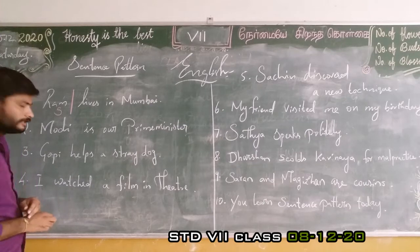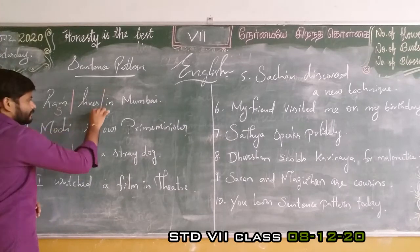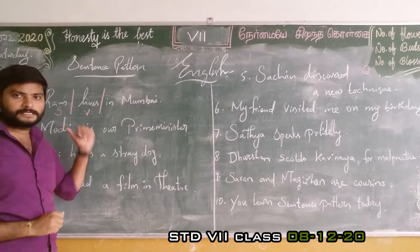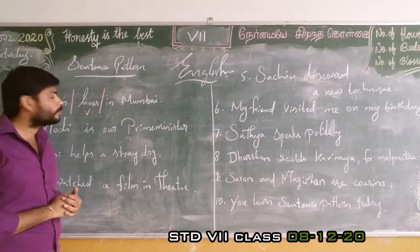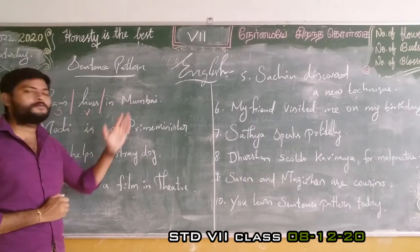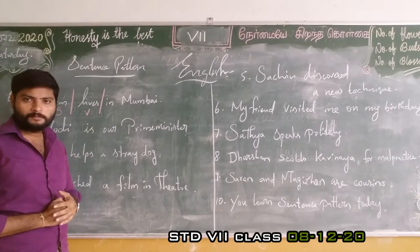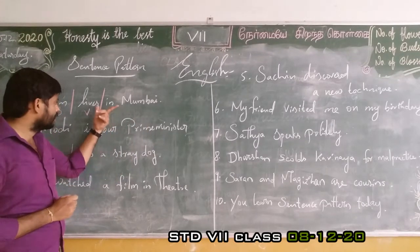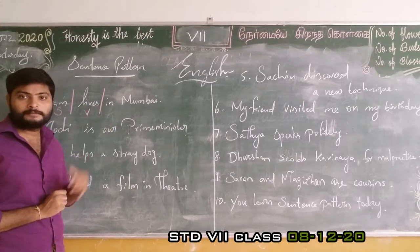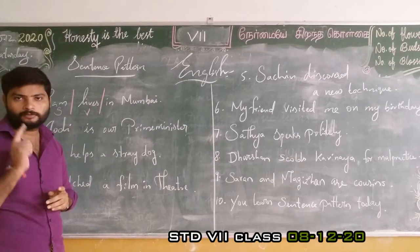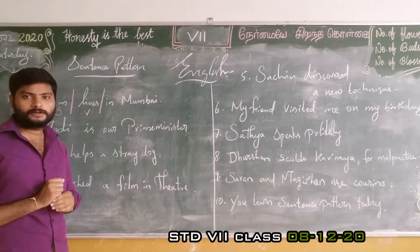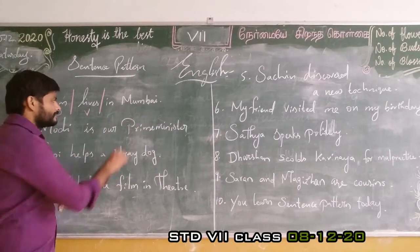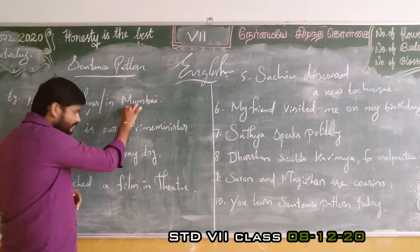What is the action? Lives. The third word: 'in Mumbai' — Mumbai is a place, and here 'in Mumbai' means the place where he lives. The question is 'where.' Mumbai answers the question 'where,' so this is called adjunct. Adjunct can or cannot be in a sentence — no problem.